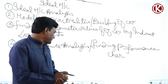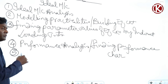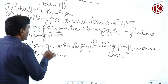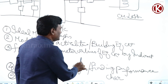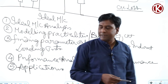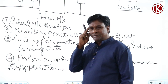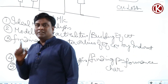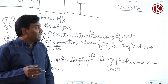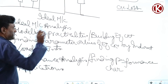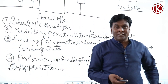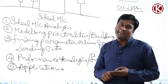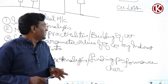After phase four, we can think of applications. For transformer, the subtopics are: phase one — ideal transformer at no-load condition and at loaded condition; phase two — modeling practicalities like copper losses, core losses, and leakage, as well as winding resistances; and phase three — finding the parameter values of the equivalent circuit.